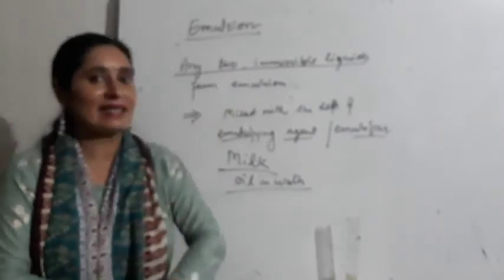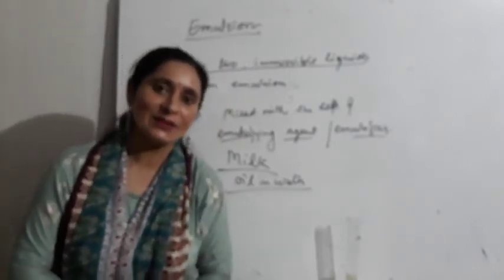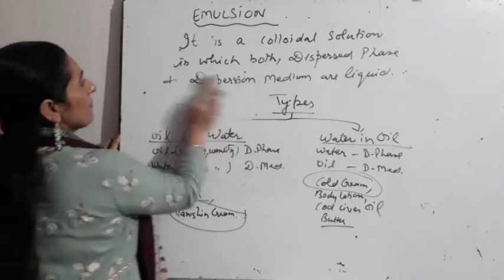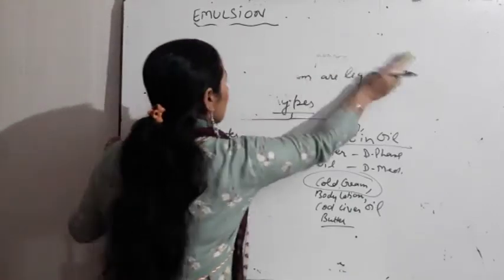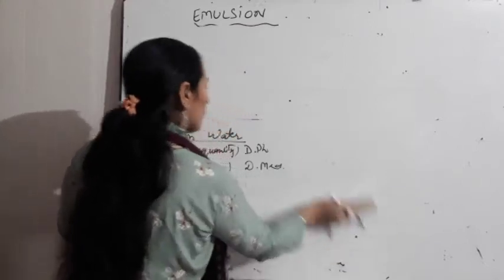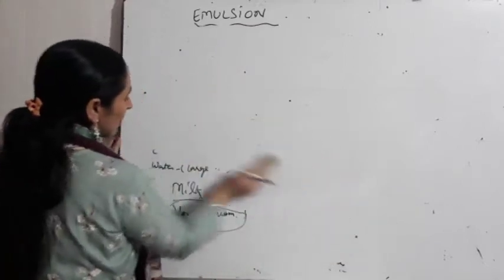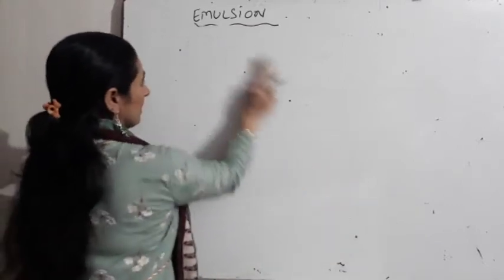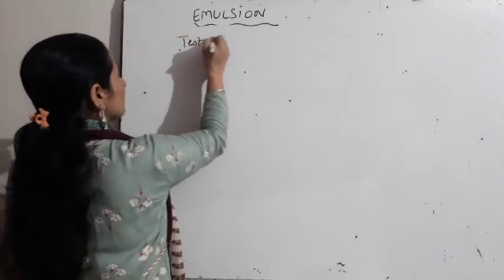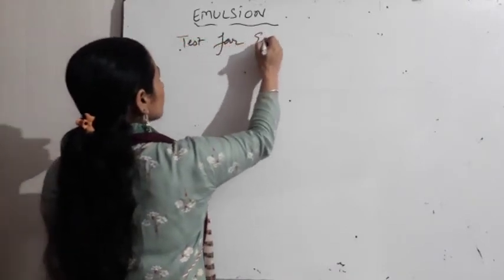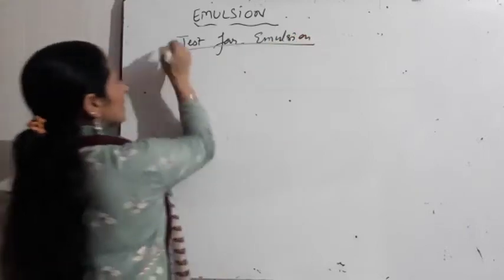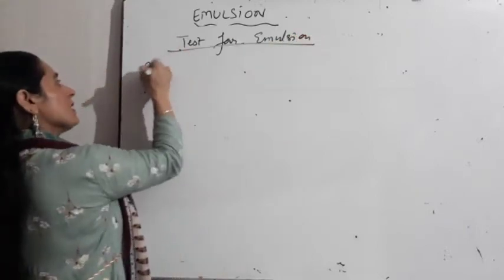So it was an example of emulsion and use of emulsifying agent — how to stabilize any emulsion. Ab humein kaise pata chalega ki kaun si emulsion water-in-oil hai aur kaun si oil-in-water hai? Let us do the test for emulsion. Sabse pehla test: dilution test.